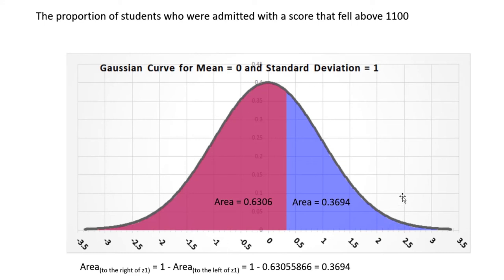Since we know the entire area under the standard normal curve with a mean of 0 and a standard deviation of 1, the entire area under that curve is 1. I know that if I subtract this reddish area right here from 1, I'll be left with only the area towards the right tail. In other words, area to the right of z1 would equal 1 minus the area to the left of z1, or in this particular case 1 minus 0.63055866 ends up being 0.3694.